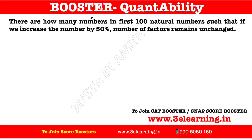How many numbers in the first 100 natural numbers — our range is 100 natural numbers — such that if we increase the number by 50%, a 50% increase means multiplying by 3/2, then the number of factors remains unchanged.